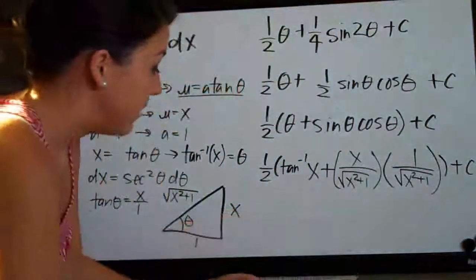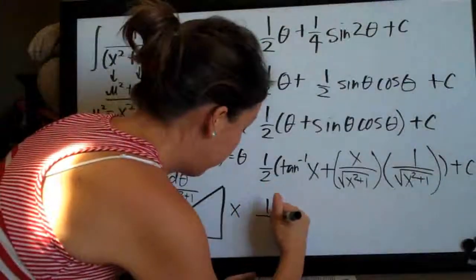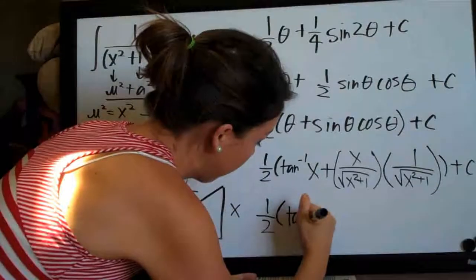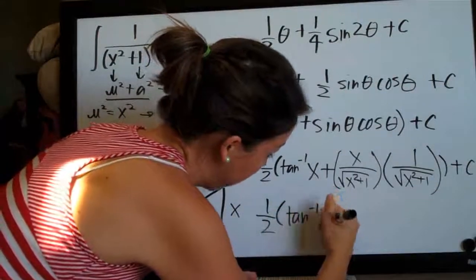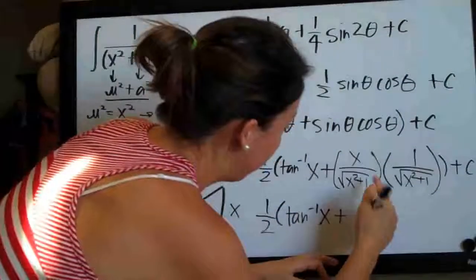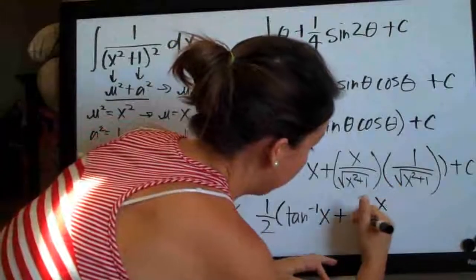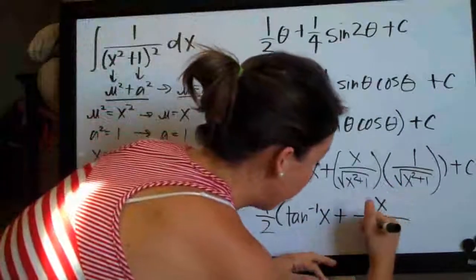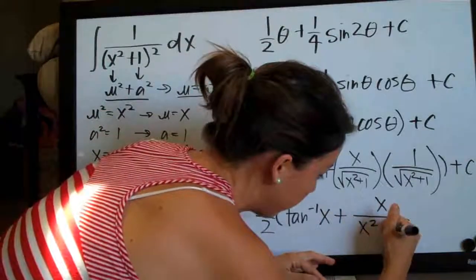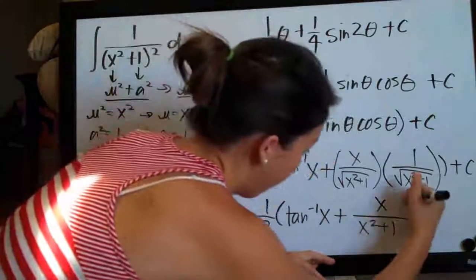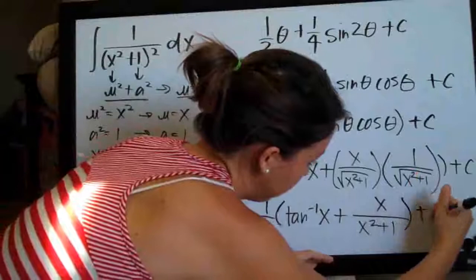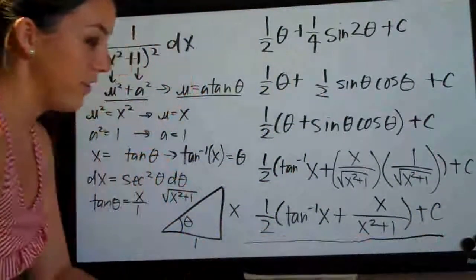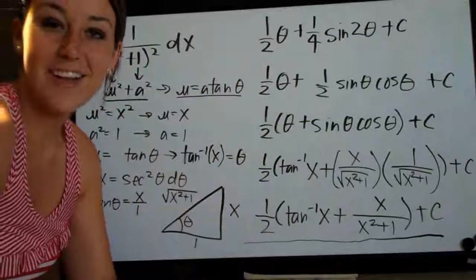Now all we need to do is simplify. Our final answer will be one half times tangent to the negative one of x, plus — combining the sine and cosine terms — x on top, and since we have a square root times a square root the square roots cancel, leaving x squared plus 1 on the bottom, plus C. And that is our final answer. Thanks, I'll see you next time!